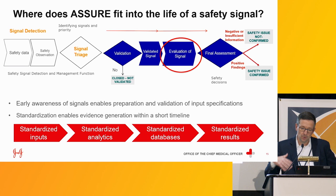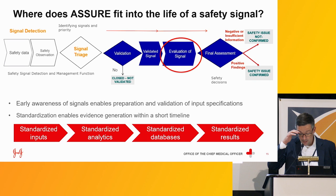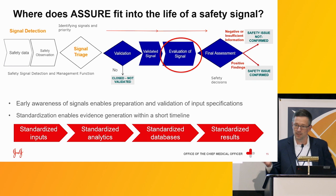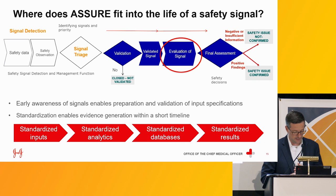ASSURE fits into the signal evaluation portion of the lifecycle management of safety signals within J&J. We work collaboratively with our medical safety officers and therapeutic area epidemiologists to provide timely evidence for final decisions and discussions at safety management team meetings. To date, this work has provided greater support to our established products group, but we have actually crossed all therapeutic areas with requests. A typical discussion often starts with a medical safety officer and is focused on a marketed product and an identified safety concern from our pharmacovigilance activities.